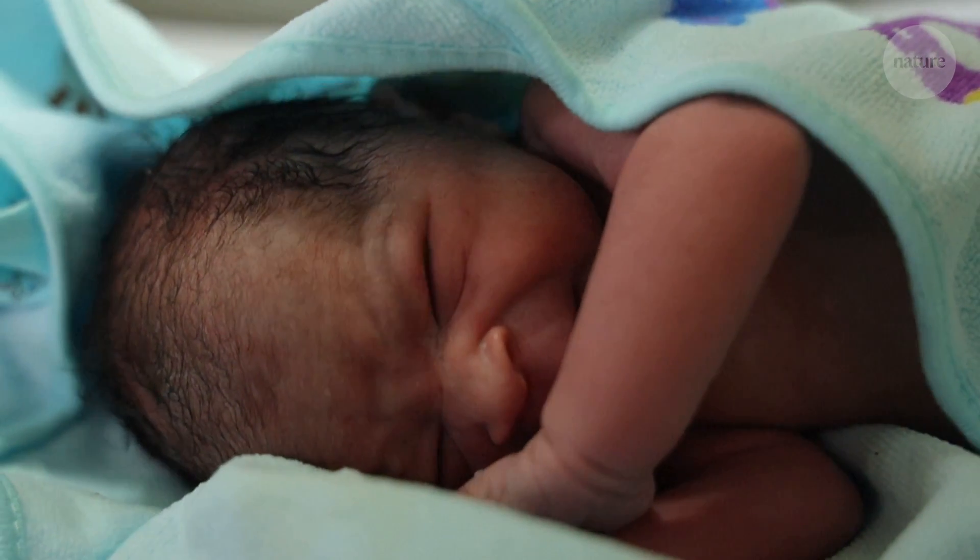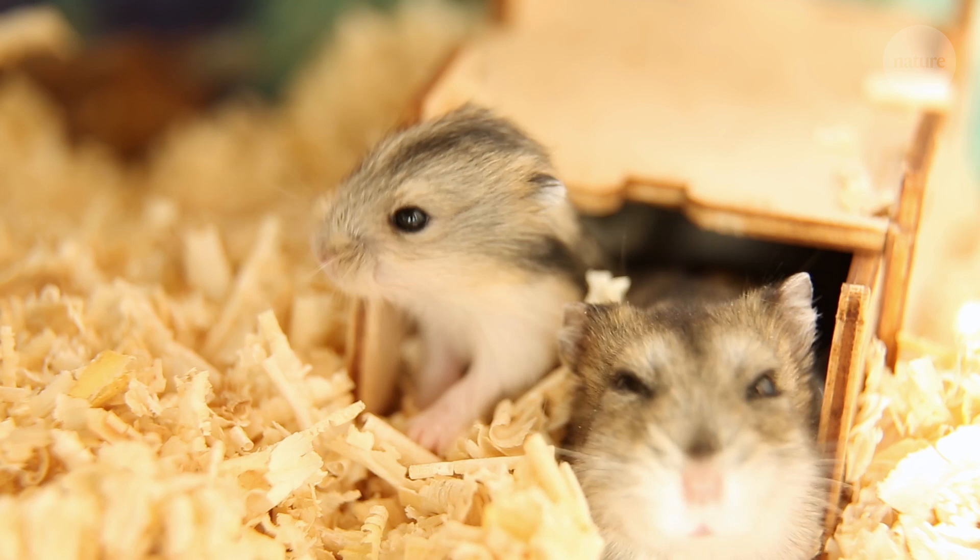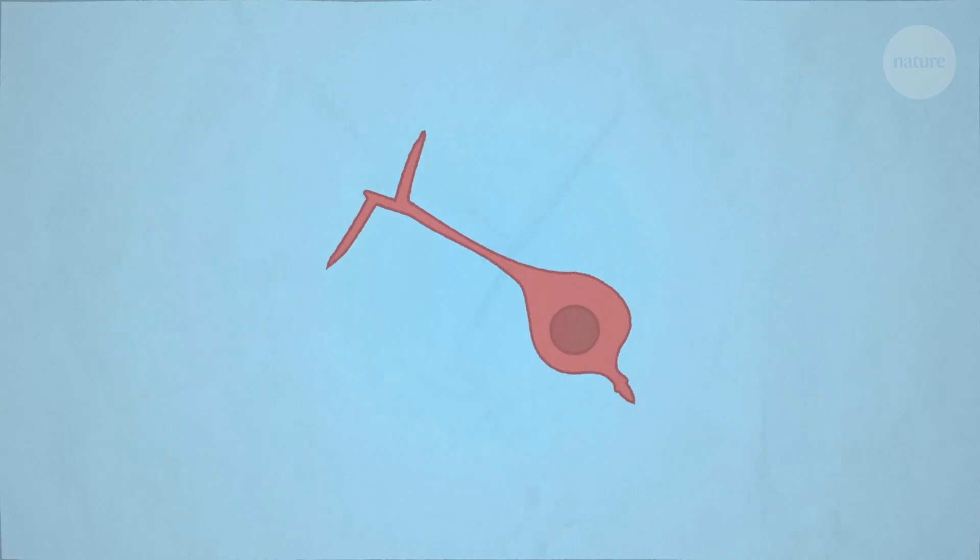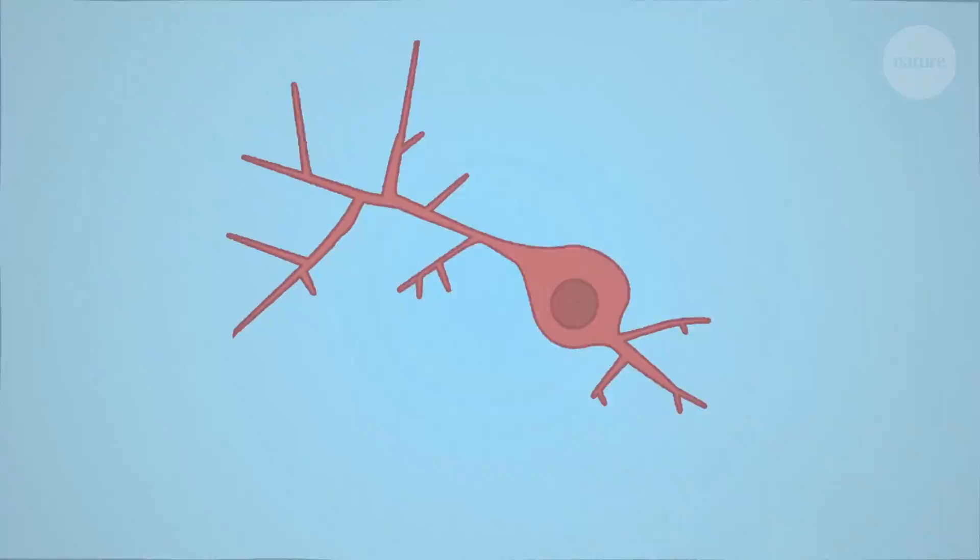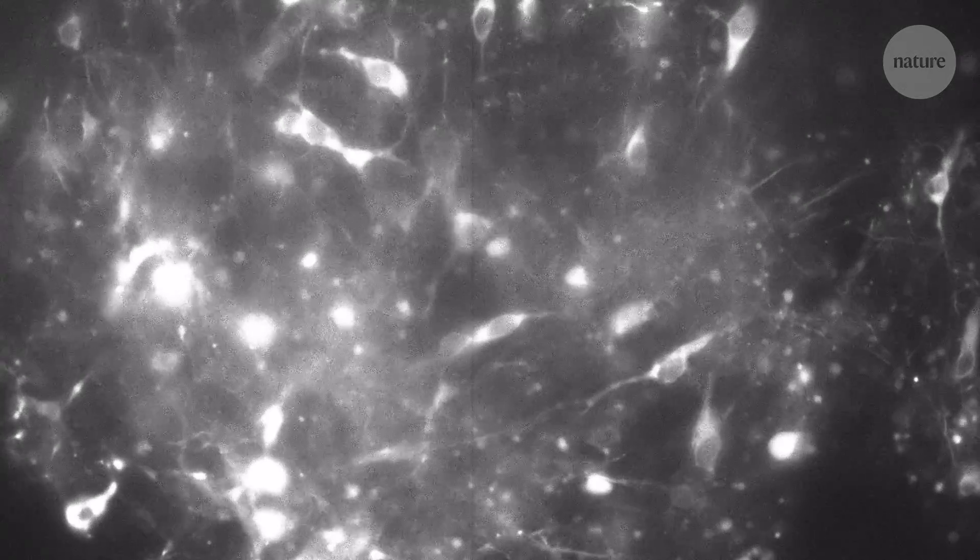The human brain develops incredibly slowly compared to most animals, and so do its cells. Some neurons can take years to reach adulthood, but what makes them grow so slowly?